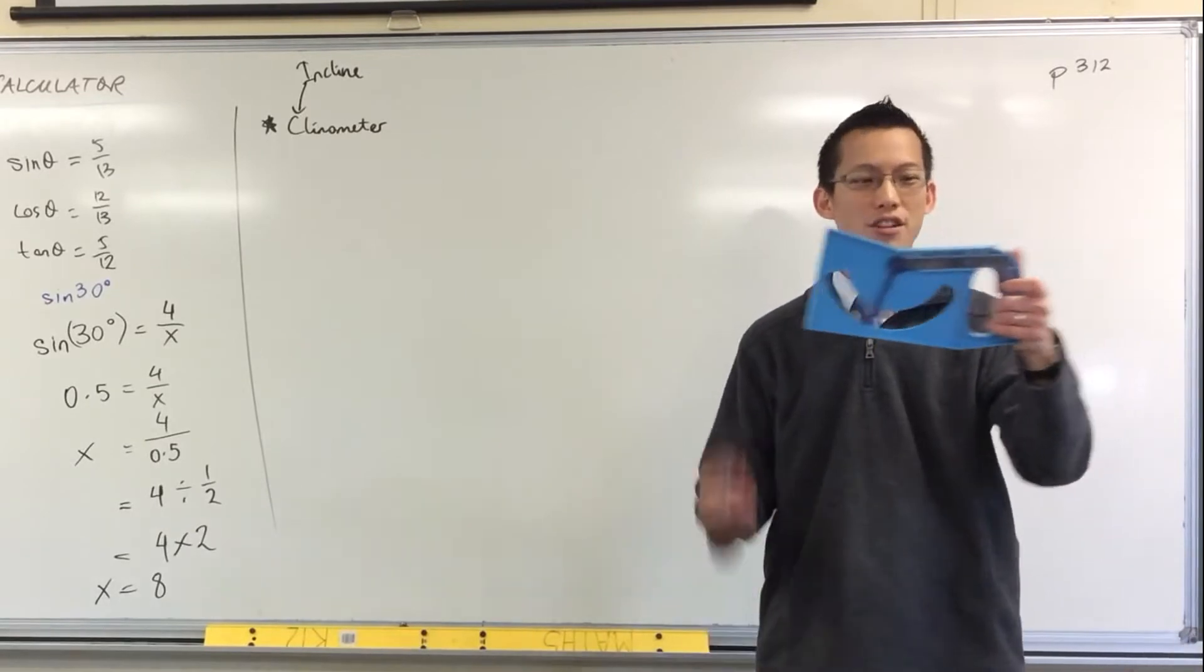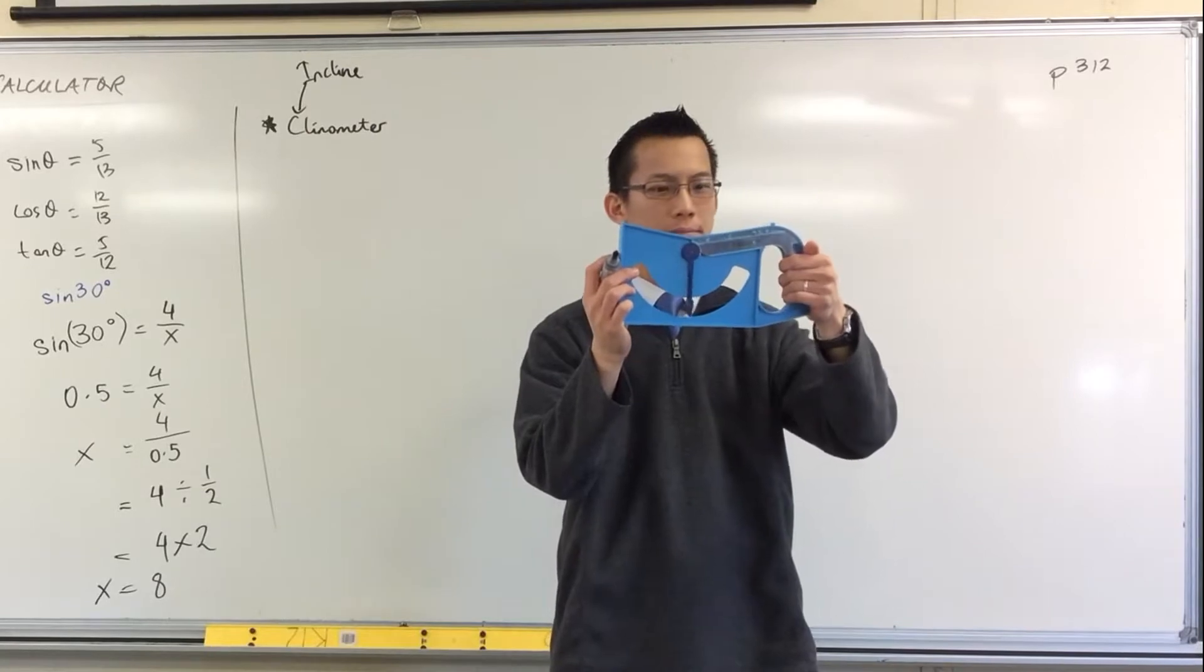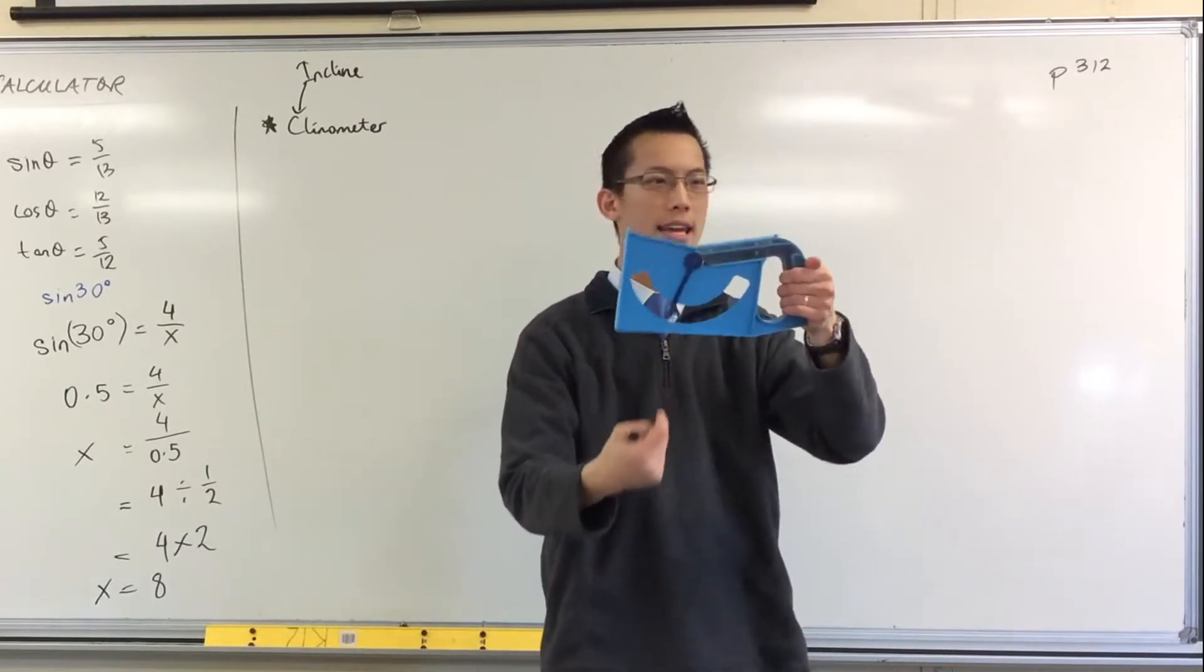So you use this to measure an angle. Now you can see there's a little trigger here, right? There's a little blue trigger. When you hold that down, what happens is this arrow in here, it releases, it goes loose.